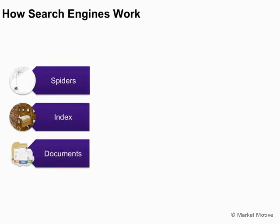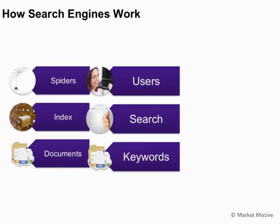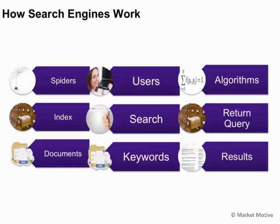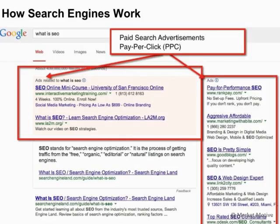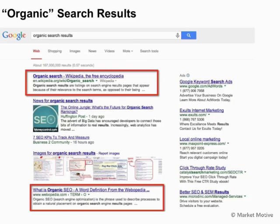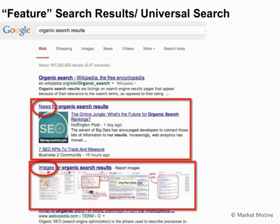This gives us an overall view of the terminology on how search engines work: spiders index documents, users search keywords, and algorithms return query results. When we do a search for 'what is SEO,' we can see the ads and pay-per-click at the top or on the sides, and the organic search results — indexed by spiders and returned without any paid placement. We also see what we call featured, universal search, or blended search results — all terminologies for news, images, and other search features triggered at the query level.